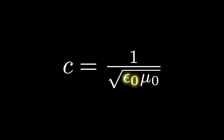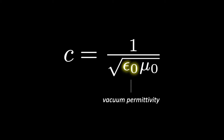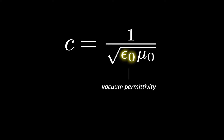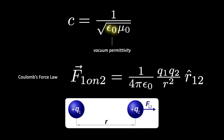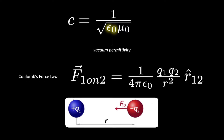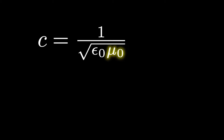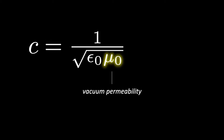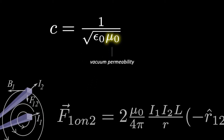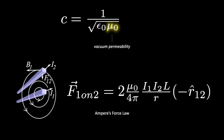That means that if we can calculate the values of these two constants, we can determine the speed of light. So what are these constants? Epsilon-naught is called the vacuum permittivity, or the dielectric constant of vacuum. You might remember it from Coulomb's force law between two electric charges. Conceptually, the permittivity of any medium measures its resistance in forming an electric field within the medium. Mu-naught is analogous to epsilon-naught but for magnetic fields. It is called the vacuum permeability, or magnetic constant, which you may remember from Ampere's force law between two current-carrying wires. Conceptually, the permeability of any medium measures its ability to allow the magnetic field to pass through the medium.